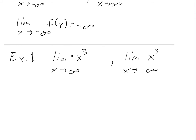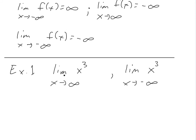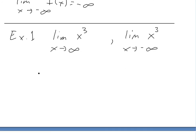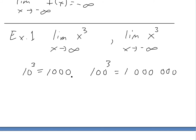To help illustrate infinite limits at infinity, we'll look at Example 1: the limit as x approaches infinity of x³, and the limit as x approaches negative infinity of x³. If you put in really large numbers — say 10³, that's a thousand; 100³ is a million — you just add three zeros every time. As you can see, no matter how large the input, the output keeps getting larger and larger. Thus, the limit as x approaches infinity of x³ equals infinity.